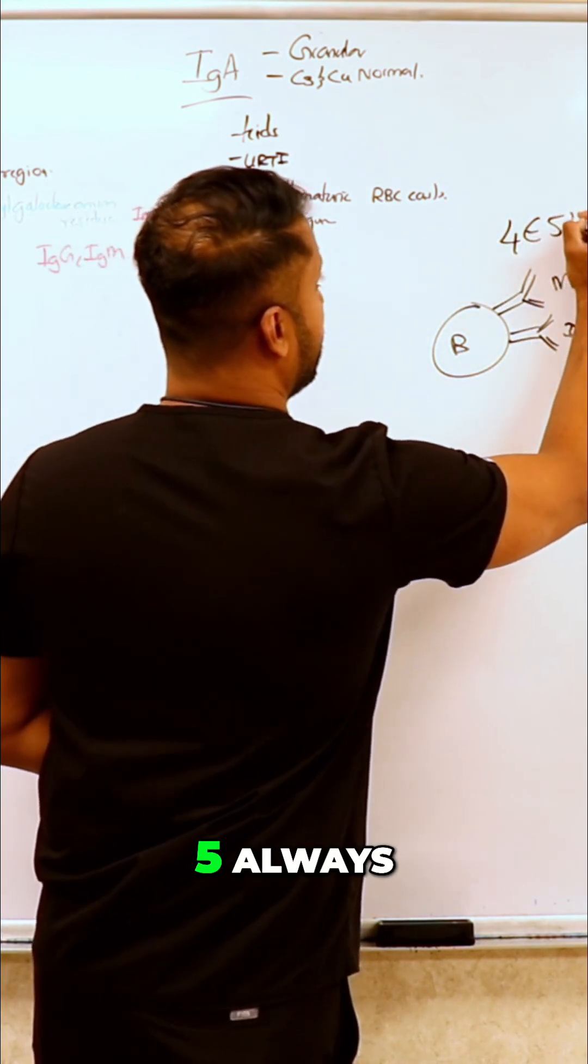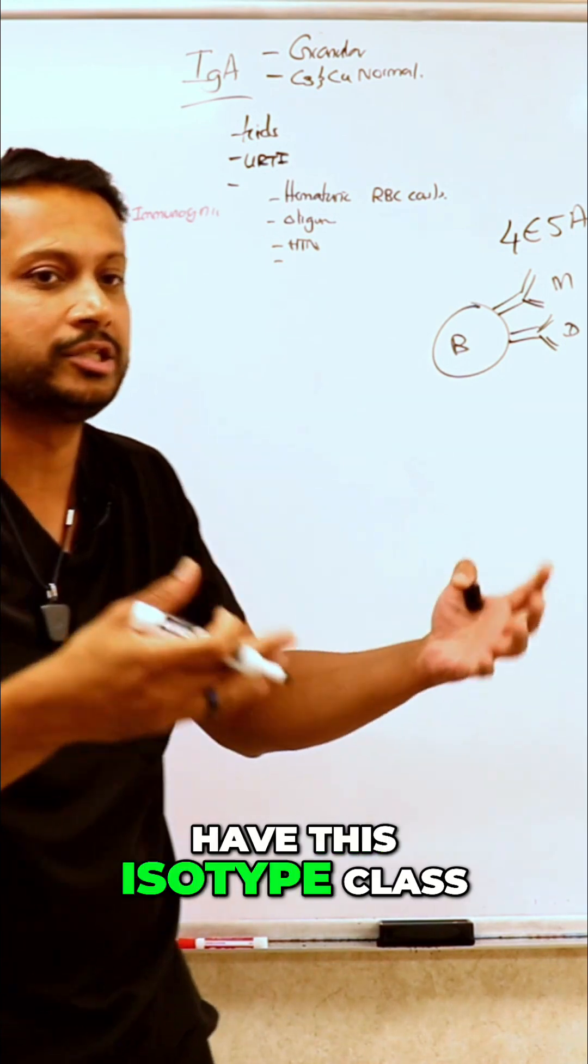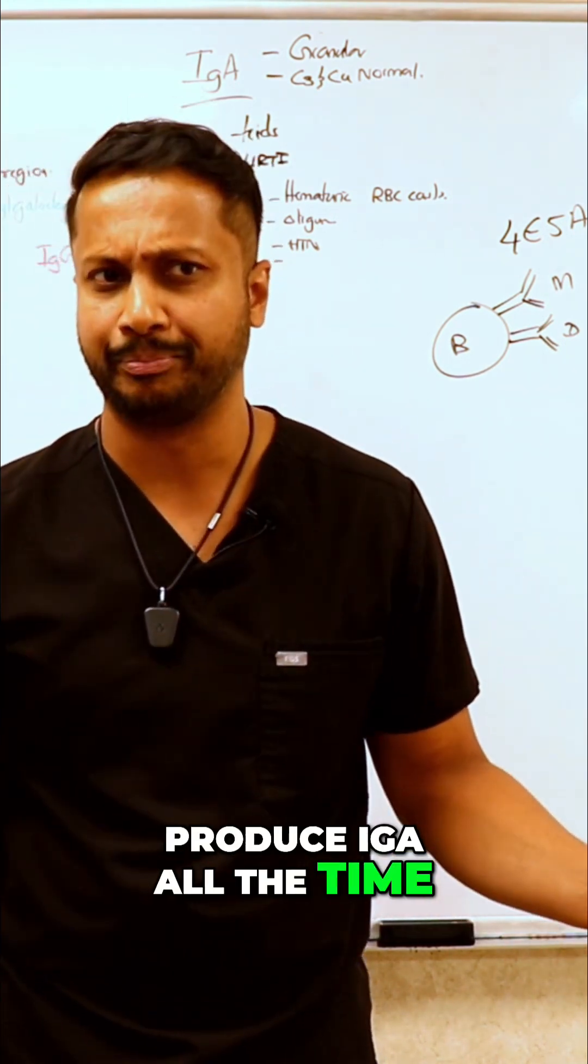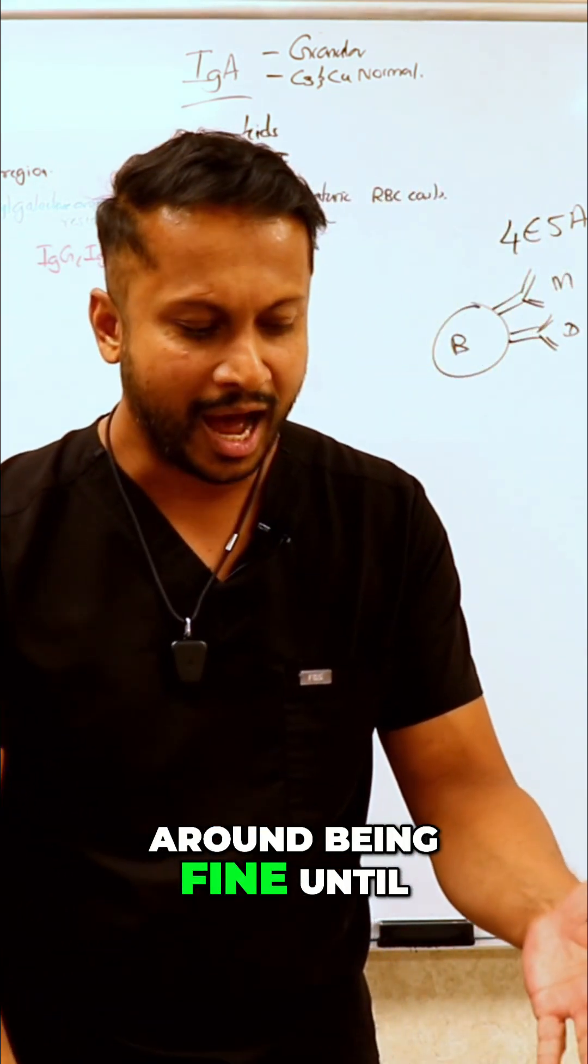Interleukin 5, always interleukin 5. You have to have this isotype class switching to produce IgA. You don't necessarily produce IgA all the time, so that means a kid could be roaming around being fine until you stimulate the body to produce IgA.